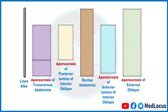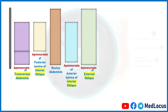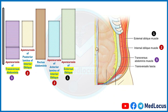Now we will compare these muscles and their aponeuroses with the picture given aside and try to find out their arrangement in the anterior abdominal wall. By the comparison we can see the external oblique muscle at the anterior-most part, then the internal oblique muscle, and then the transversus abdominis muscle.